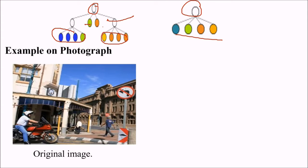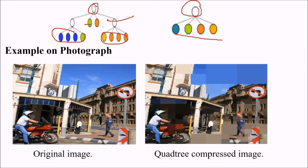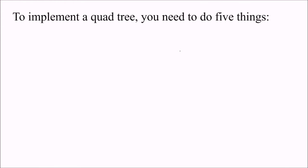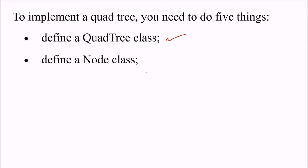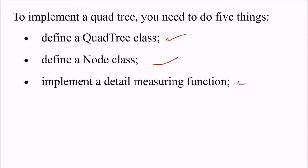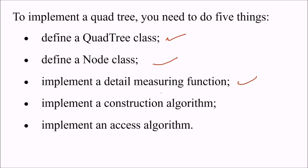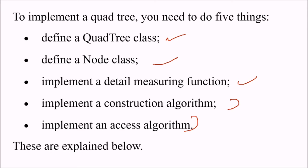Let us take the example of a photograph. When we make a quad tree out of it, certain areas can be represented by just one value. To implement a quad tree we need five things: define a quad tree class, define a node class, implement a detail measuring function, implement a construction algorithm, and implement an access algorithm. We will take them one by one.